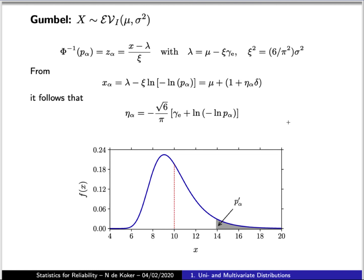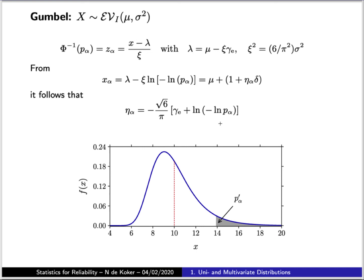Doing the same thing for the Gumbel distribution, one can go through the transformation, substitute the various parameters, and end up with the corresponding form for the interval multiplier. These various equations will be used later on to calculate characteristic values of loads, where you want a conservative upper bound on load magnitude — especially for imposed and wind loads where the Gumbel or other extreme value distributions play a role — or where you want characteristic lower bounds on material resistance properties.